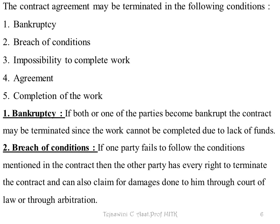Breach of Condition: If one party fails to follow the conditions mentioned in the contract, then the other party has every right to terminate the contract and also claim for damages through a court of law or through arbitration. Breach means one party — whether the contractor or the owner — fails to follow any one rule of the contract. If that happens, then the final process will be termination.